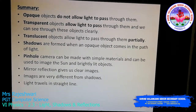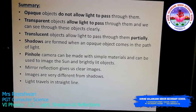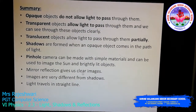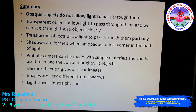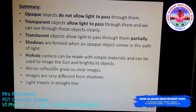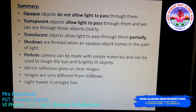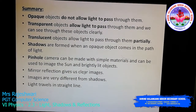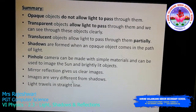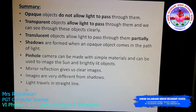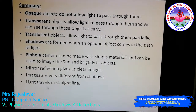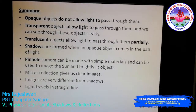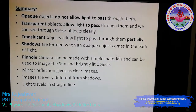Shadows are formed when an opaque object comes between the rays of light. A pinhole camera can be made with simple materials available at home and can be used to image the sun and brightly lit objects. A mirror gives us clear images through reflection, images are very different from shadows, and light travels only in a straight line. I hope you understood this lesson — see you in the next class, thank you.